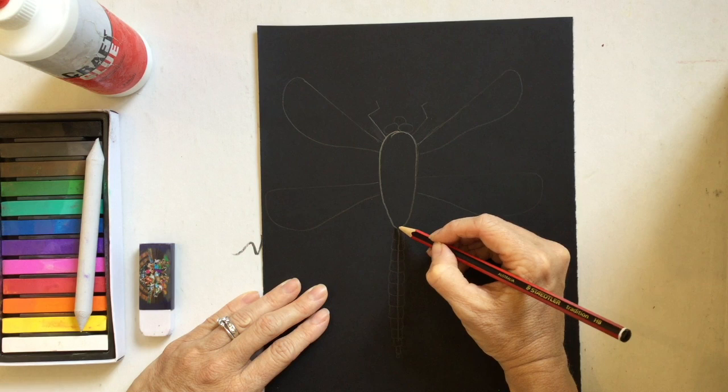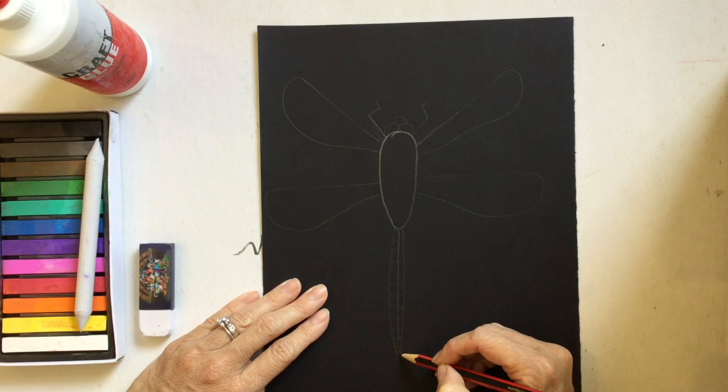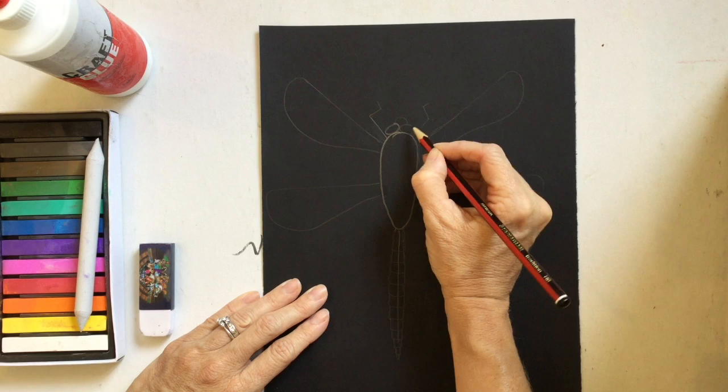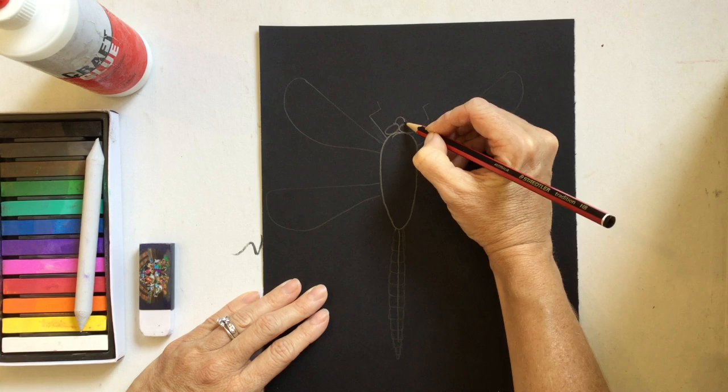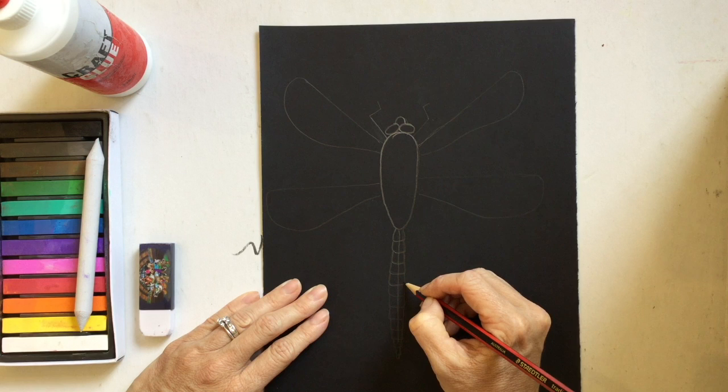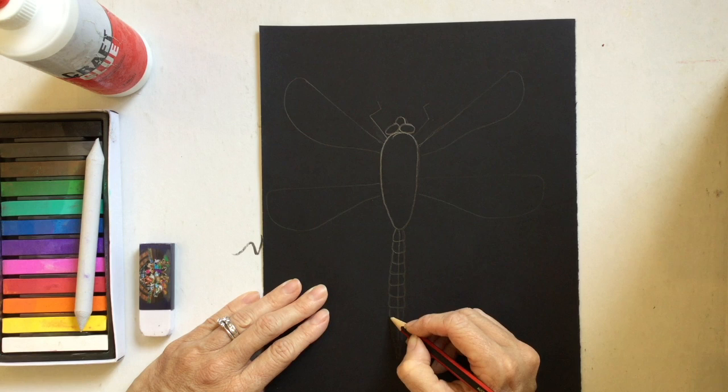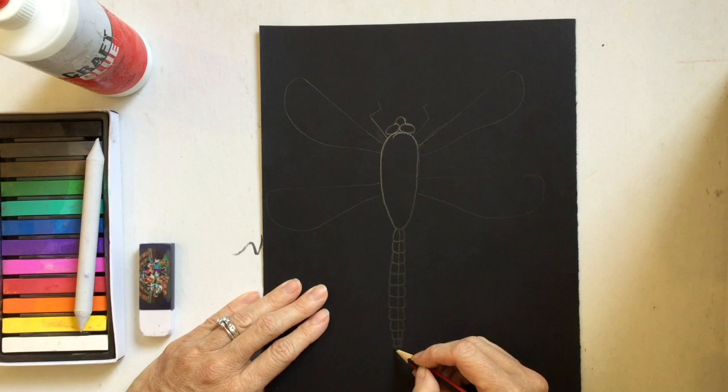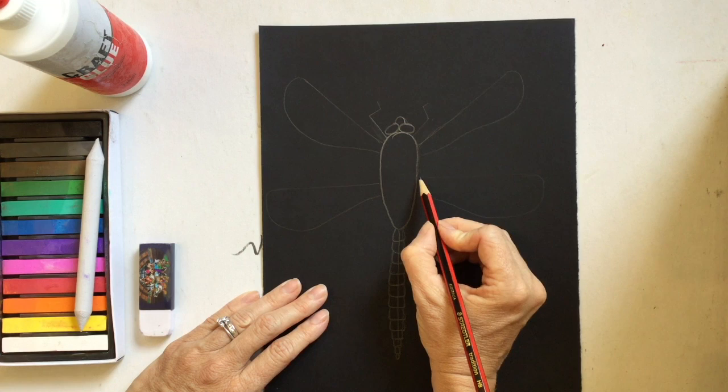Then we kind of start filling in that tail. Then I go up here to the eyes. Little ovals, then the mouth. I'm going to go back down here to the tail and just kind of make the tail details. Now with details, I'm making this fairly simple because when we glue, we're going to glue over all of these drawn pieces. So we don't want it too small or too many details.